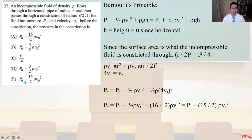Number 32. An incompressible fluid of density rho flows through a horizontal pipe of radius R and then passes through a constriction of radius R over 2. If the fluid has pressure V0 and velocity V0 before the constriction, the pressure in the constriction is, and we're going to apply Bernoulli's Principle here, where P1 plus one-half rho V1 squared plus rho GH equals P2 plus one-half rho V2 squared plus rho GH, where H equals the height, and it's zero since this is horizontal.